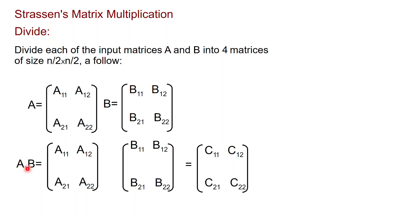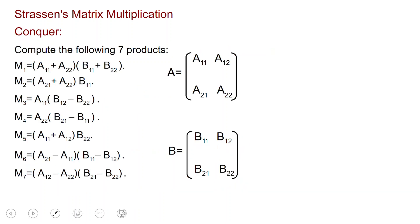And we are interested in computing the product A times B, which is going to be some other four submatrices, each of size n over 2 by n over 2, giving overall an n by n matrix. The conquer step is as follows. It is very non-trivial, and I am showing it just to show you that it exists.